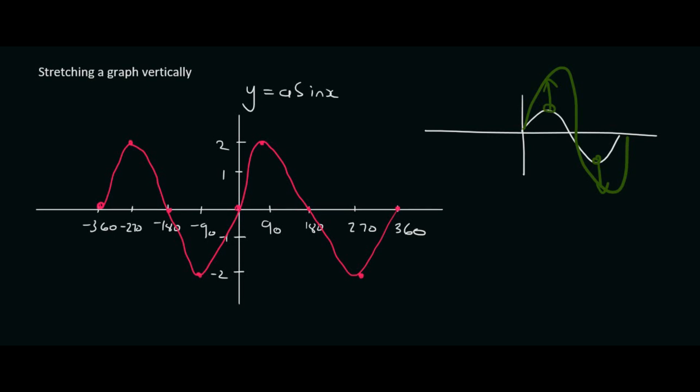So this is a sin graph. It has not been moved upwards or downwards like in the previous lessons because there's no number at the end here. The important number we're looking at this time is in the front. That number tells us that it's been stretched.